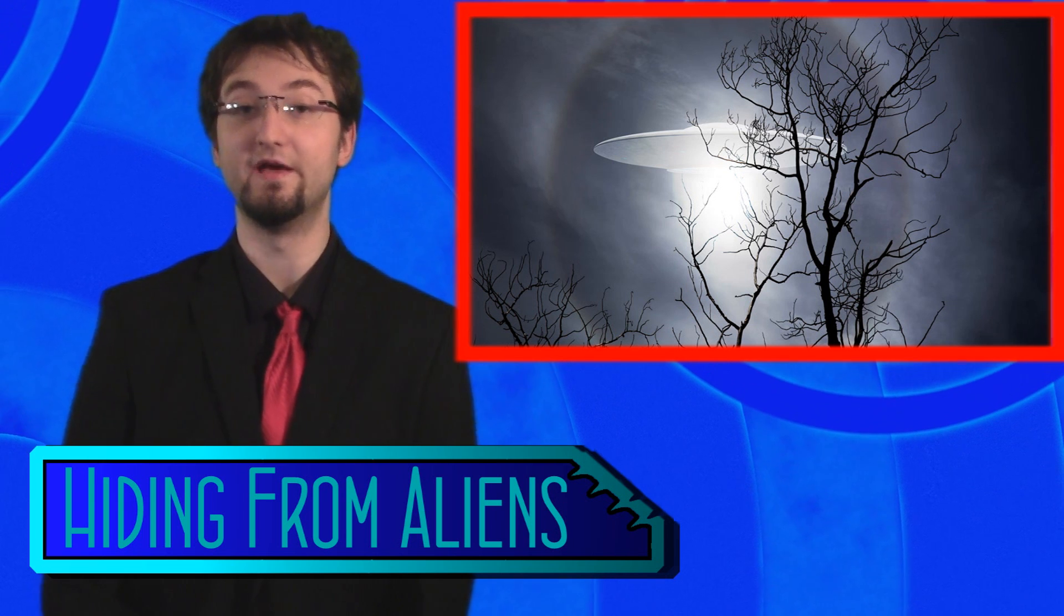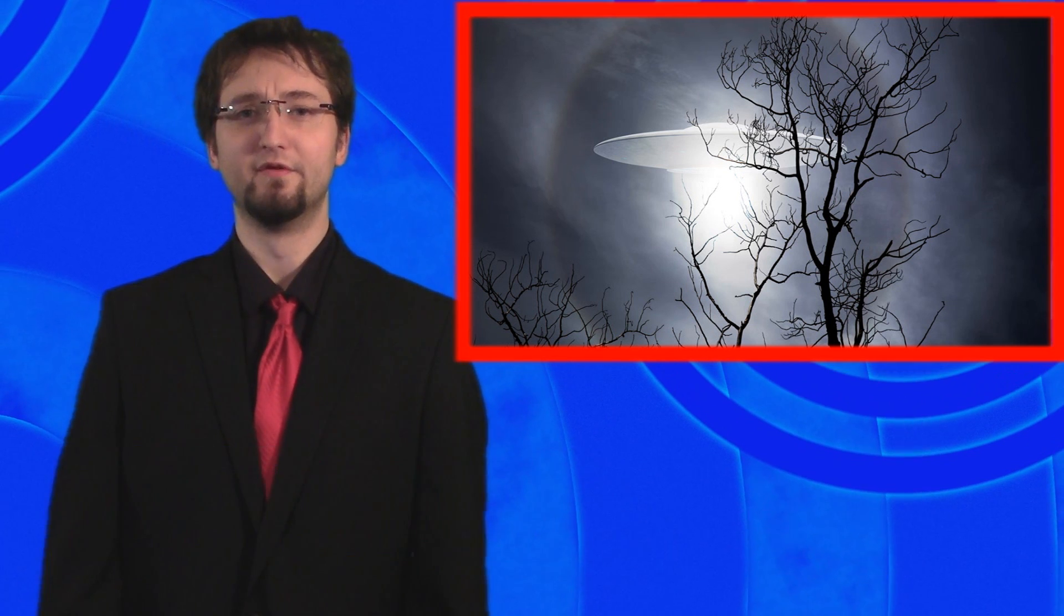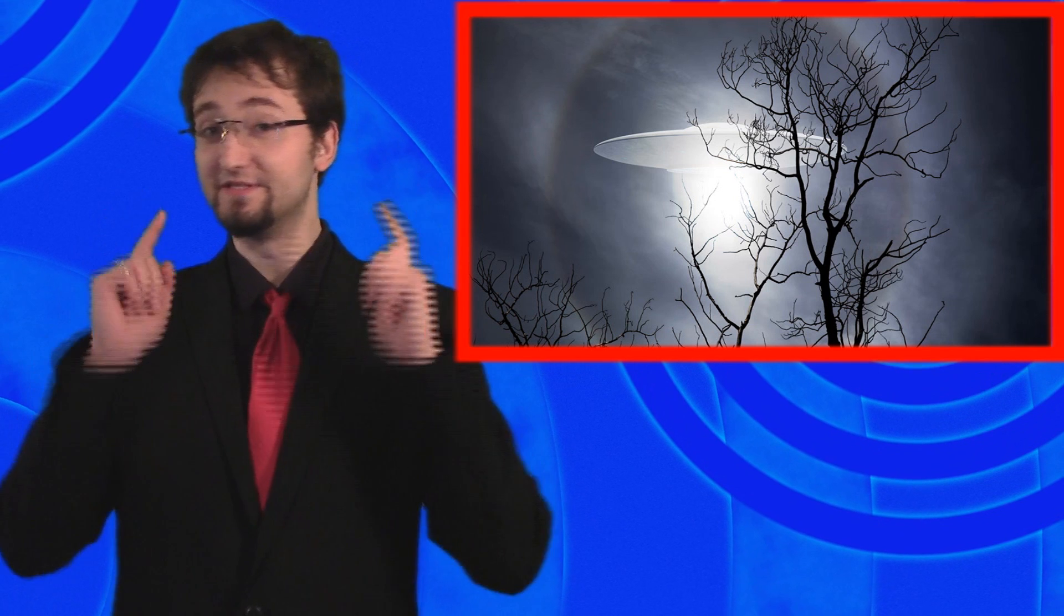In a bizarre twist, scientists at the University of Columbia are attempting to hide the Earth from detection from aliens. You may be asking yourself, why would they be trying to do that? But scientists have their reasons. The biggest concern from extraterrestrials is that they could harvest our planet for resources, or they may have hostile intent.